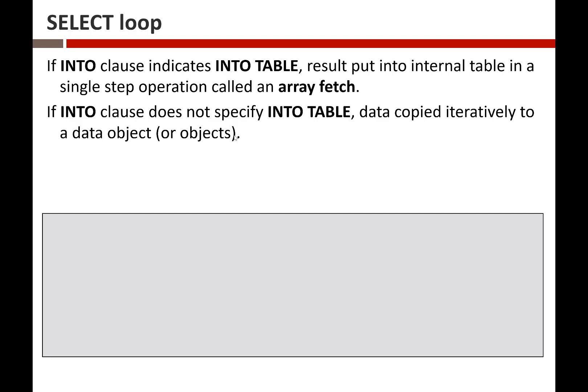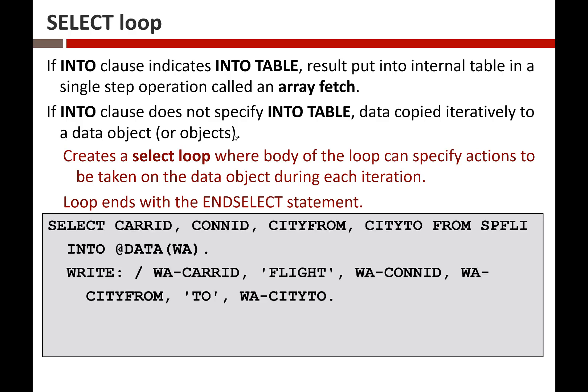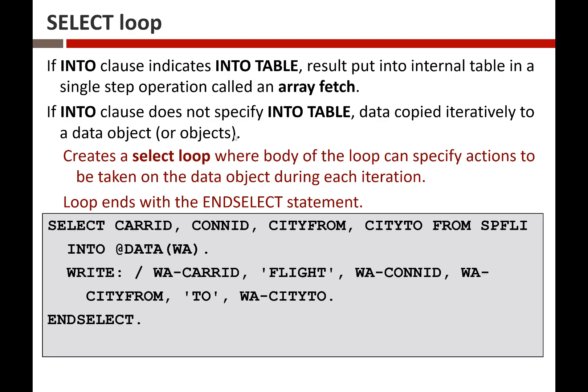So if I say INTO TABLE and this is the database table out here, the system goes out, grabs the whole thing, and in one operation moves it to my internal table. If I don't specify INTO TABLE, then my SELECT statement is going to go out and grab one record and put us into a looping condition. In that loop it will allow me to iteratively step through everything being retrieved by that SELECT statement.